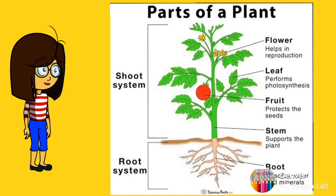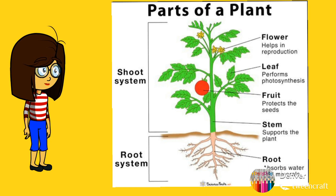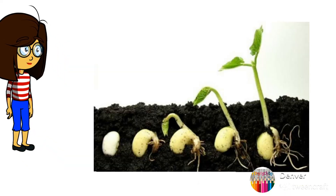A plant grows from a seed. It needs sunlight, air, water, and nutrients to grow. As you can see in the picture, the first one is a seed, from there you can see the leaves growing and also the roots — the leaves going above the soil and the roots growing below the soil.